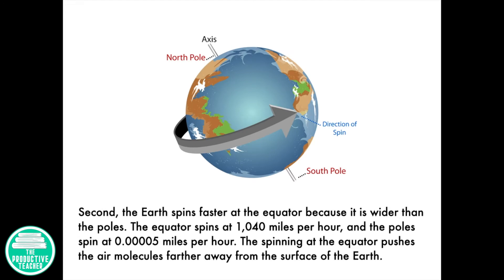Second, the Earth spins faster at the equator because it is wider than the poles. The equator spins at 1,040 miles per hour, and the poles spin at 0.00005 miles per hour. The spinning at the equator pushes the air molecules farther away from the surface of the Earth.